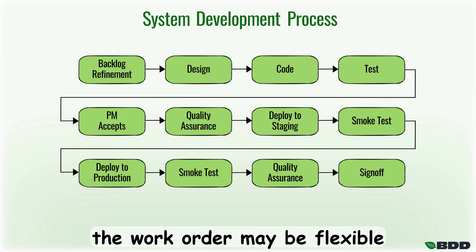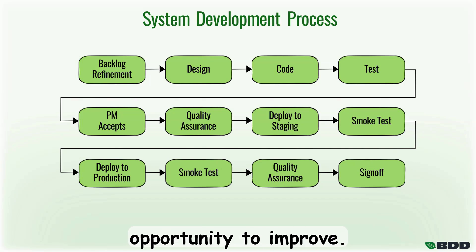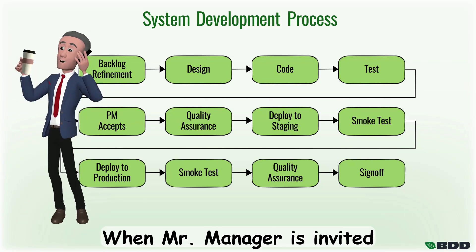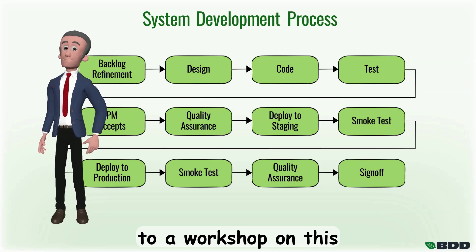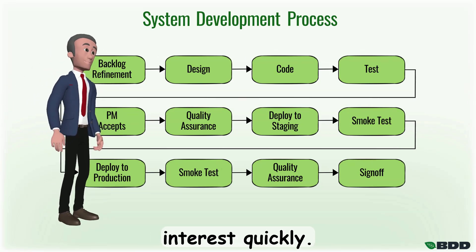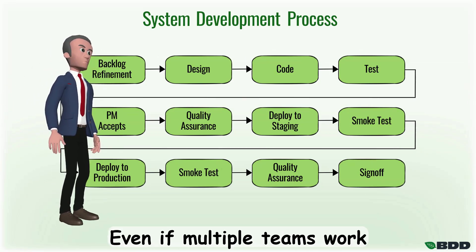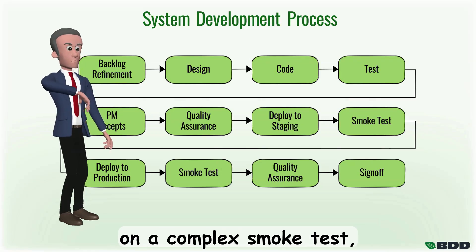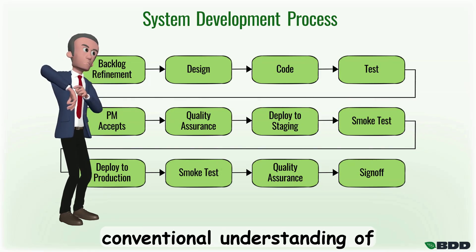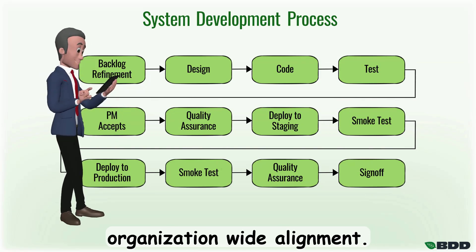In reality, the work order may be flexible depending on the need and opportunity to improve. When Mr. Manager is invited to a workshop on this detailed level, he is likely to lose interest quickly. Even if multiple teams work on a complex smoke test, it doesn't align with a conventional understanding of organization-wide alignment.